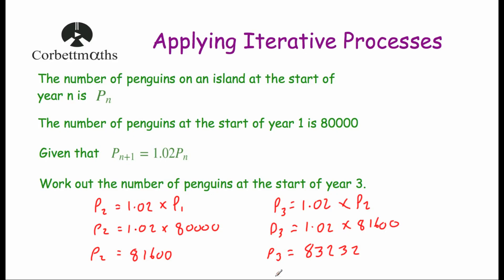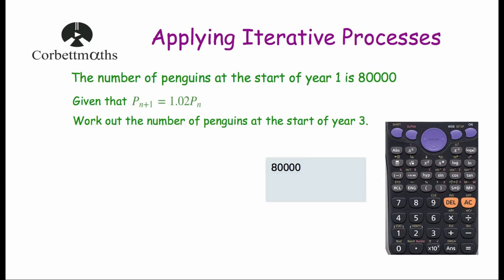You just keep repeating that — you could keep on using this formula. For instance, if we wanted to know the number of penguins at the start of year 4, we would do 1.02 times 83,232, and so on. In these iterative process questions, it can be quite useful to use the ANS button on your calculator. In this question, to find the number of penguins in the following year we just keep on multiplying by 1.02.